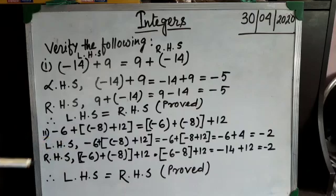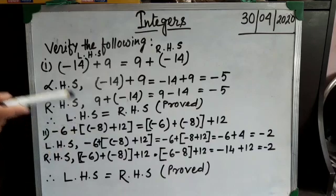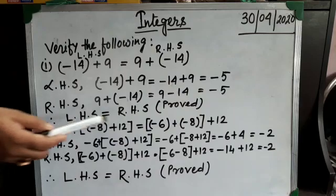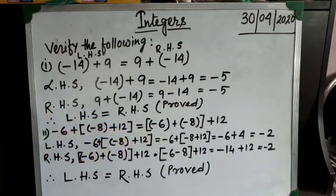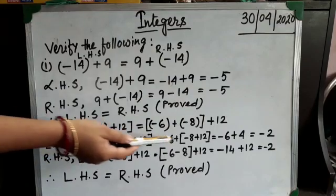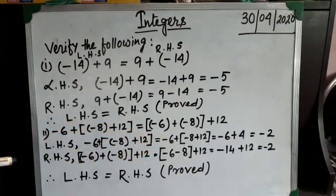That is -6 + [(-8) + 12]. So first of all we will complete the third bracket work. Third bracket, minus 6 as it is we will write. Then take out the number in the bracket, that is minus 8 plus 12. Complete it.